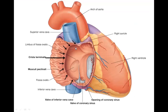Here you can appreciate the crista terminalis which demarcates the smooth part and the rough part. It starts from the upper part of the inter-atrial septum, passes in front of the opening of the superior vena cava where it turns, and then runs downwards to the inferior vena cava.